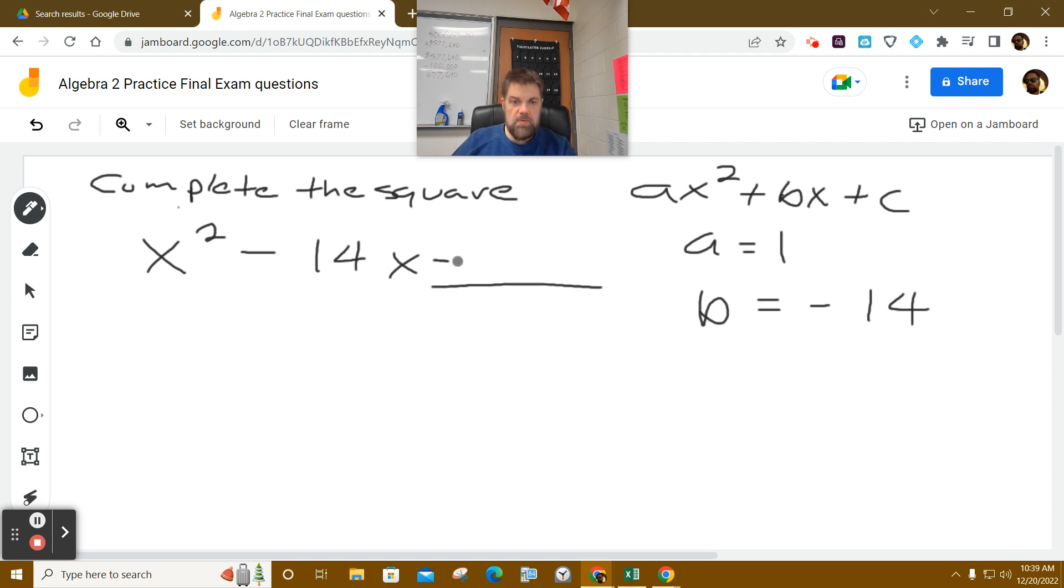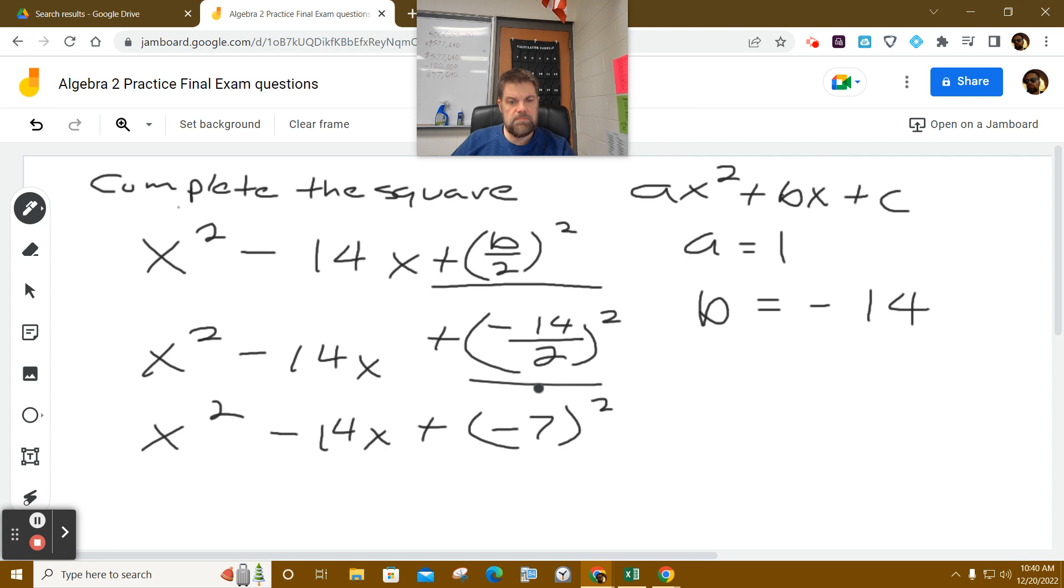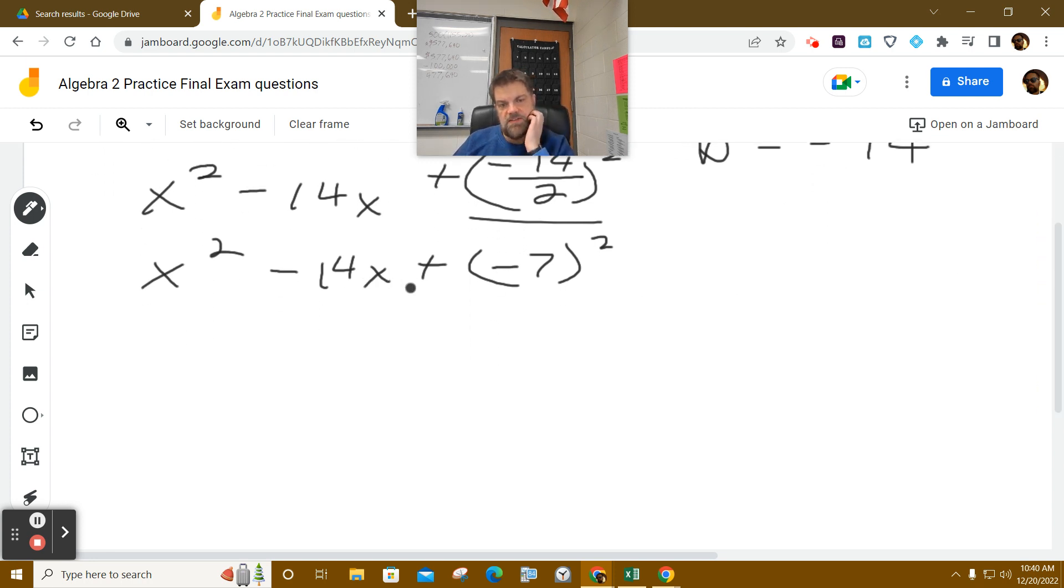To complete the square, we're going to add b over 2 and square that. So that means we're going to say negative 14 over 2. I'm writing out each step so you guys can see where it comes from. So then this becomes negative 7 squared, and at that point, it becomes x squared minus 14x plus 49.